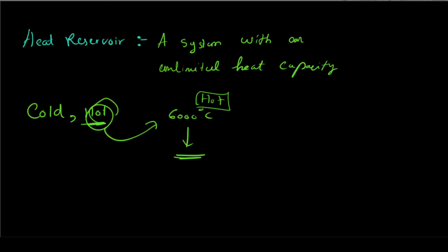What is the definition of heat reservoir? The definition of heat reservoir is that the system has unlimited heat capacity. Because if you use unlimited heat capacity, you can use heat reservoir — you can use it as cold reservoir or hot reservoir.